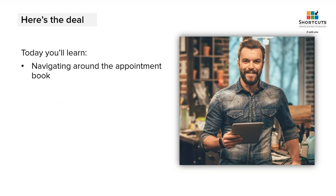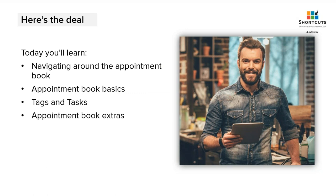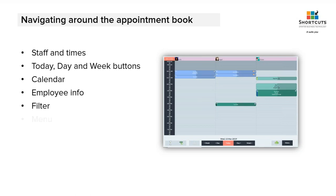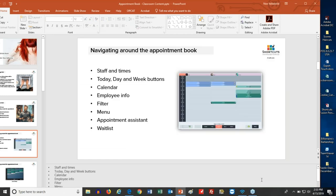Today we're talking about the appointment book. We have a few goals: understanding the basics of the appointment book screen — how to navigate, how to find your way around — some basics and even some more advanced things like working with tags and working with tasks, which will help you track your staff and customers. We'll cover appointment book extras and even talk a little about the cloud appointment book. We'll also look at how to navigate the point-of-sale appointment book, find staff and business information, navigate forwards and backwards, use calendars, filters, the appointment system, and the wait list.